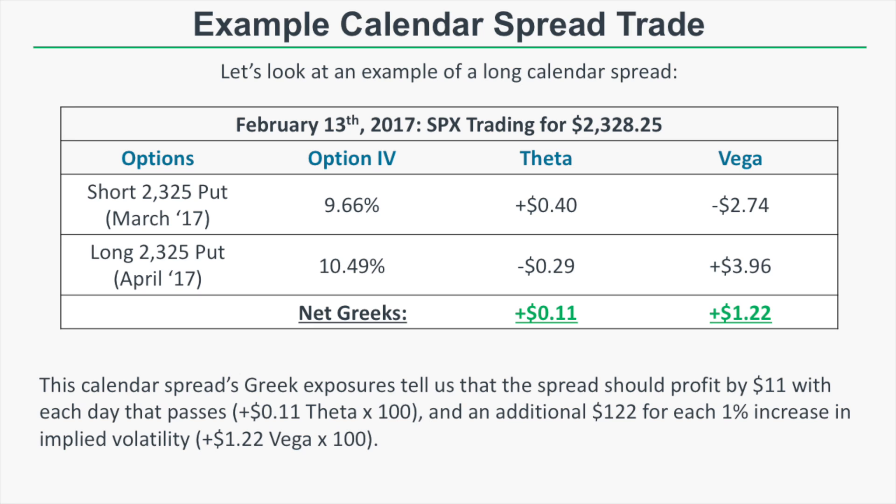Looking at vega values, the short put has a vega of negative $2.74, meaning if that option's implied volatility increases by 1%, the option price increases by $2.74 — a loss for us since we're short. The long 2325 put has a vega of plus $3.96, so a 1% increase in implied volatility gains us $3.96. If both options experience a 1% increase in implied volatility, our net profit is $3.96 minus $2.74, equaling $1.22. But there's a problem.